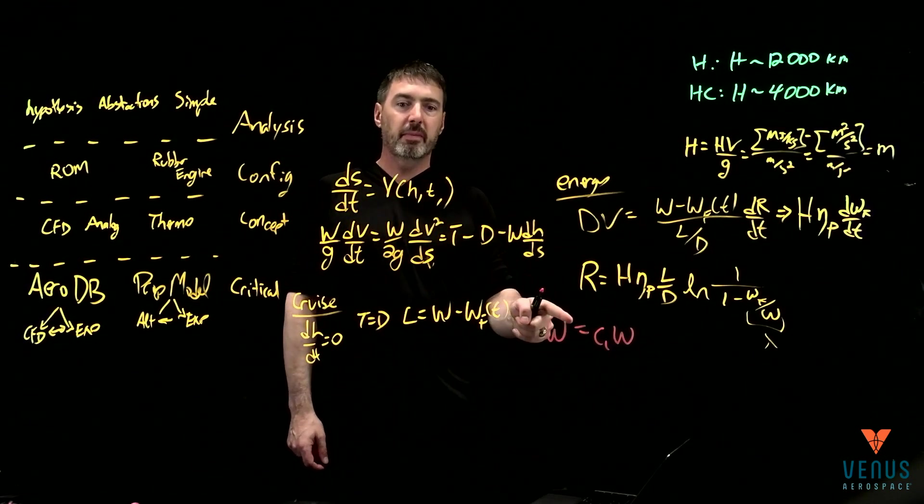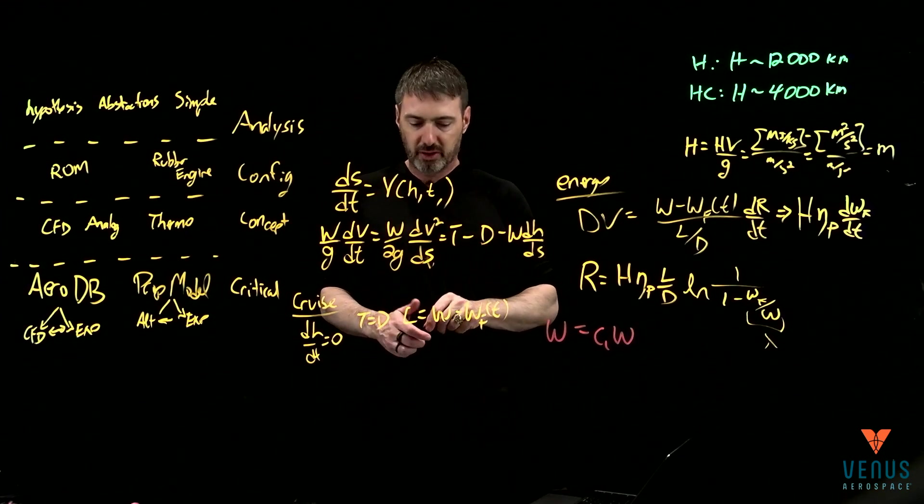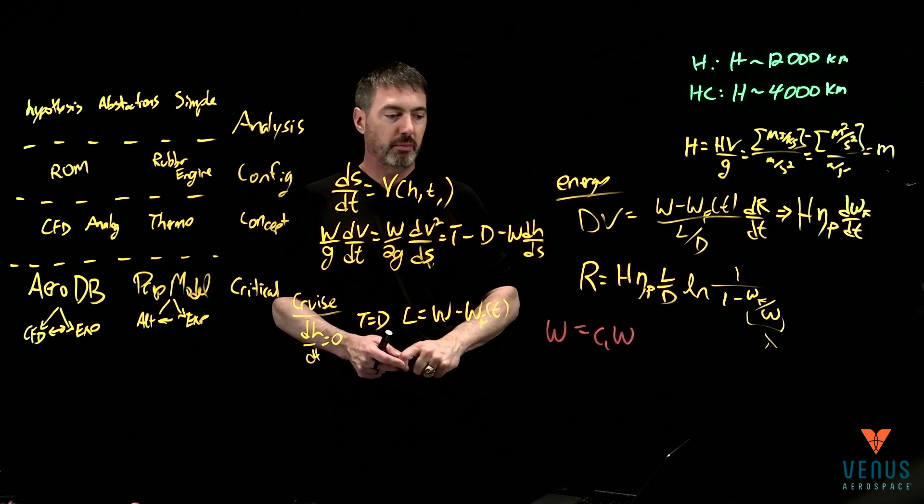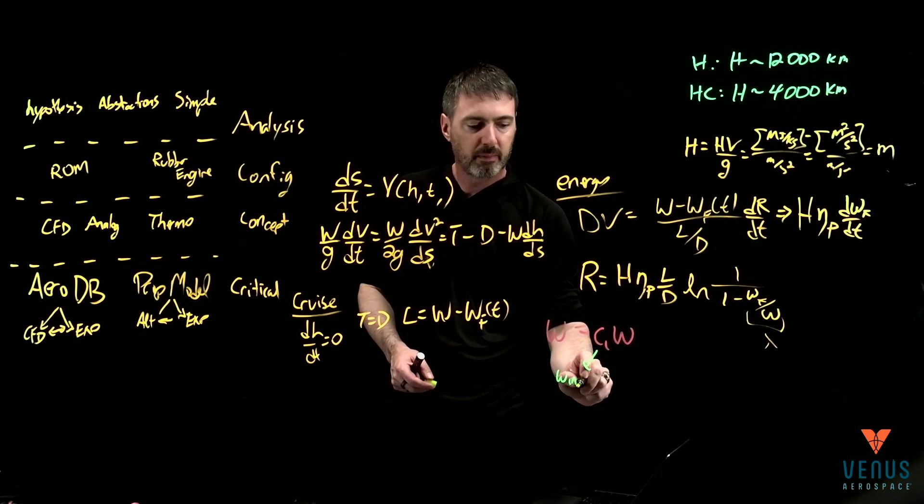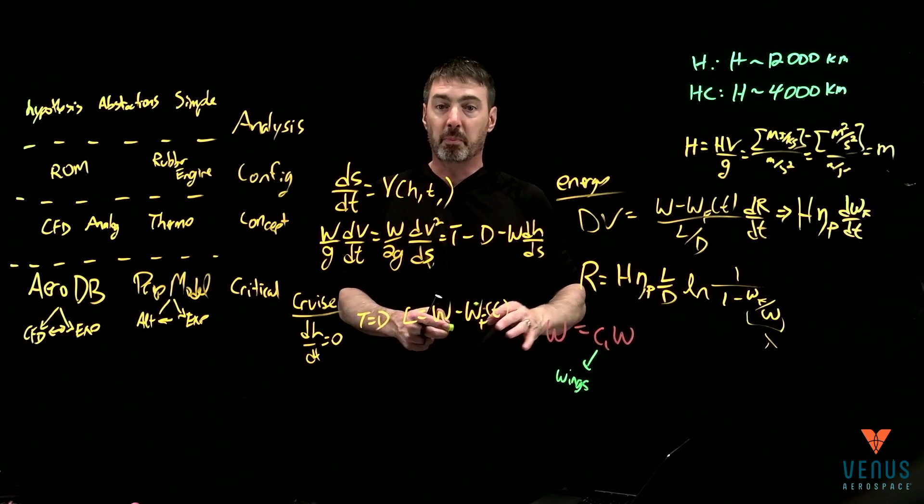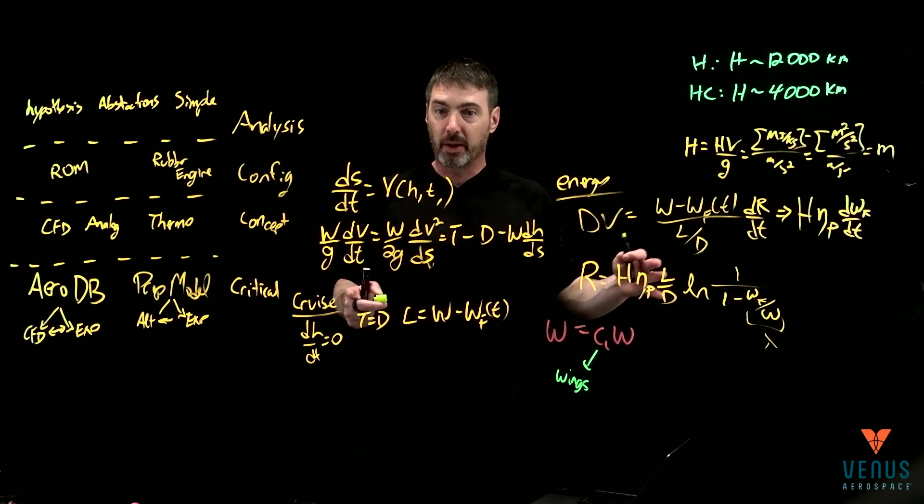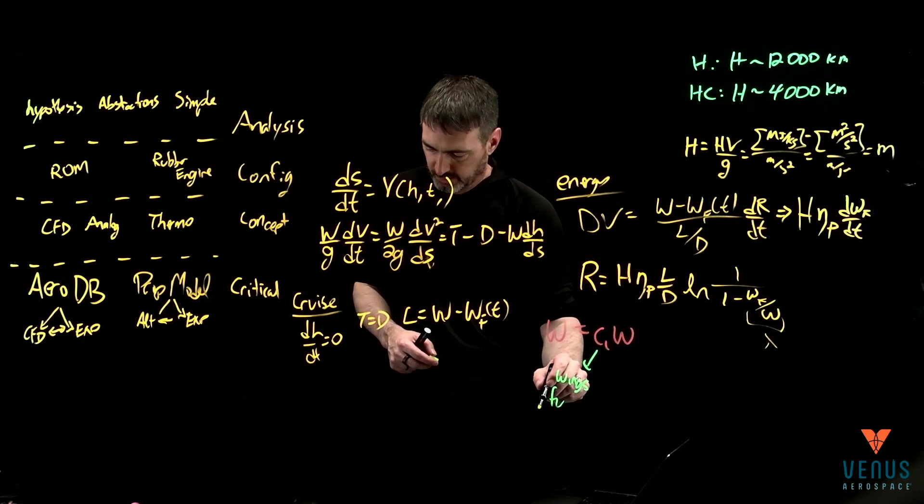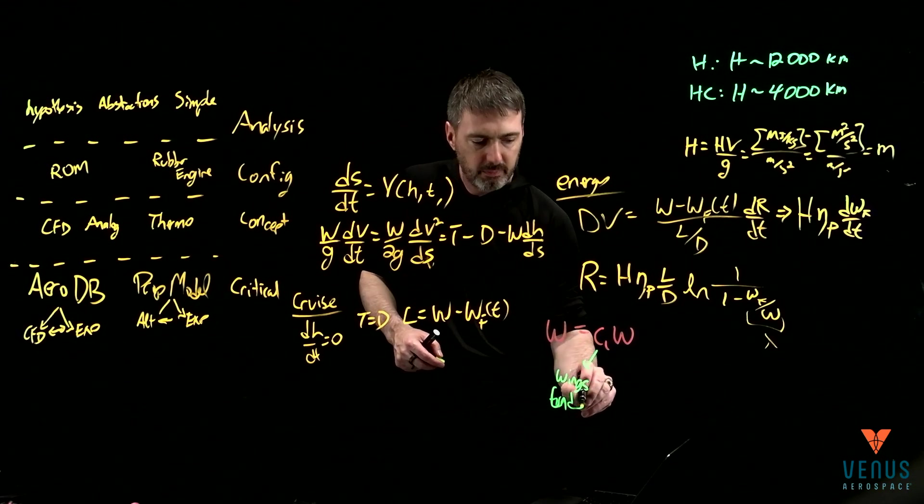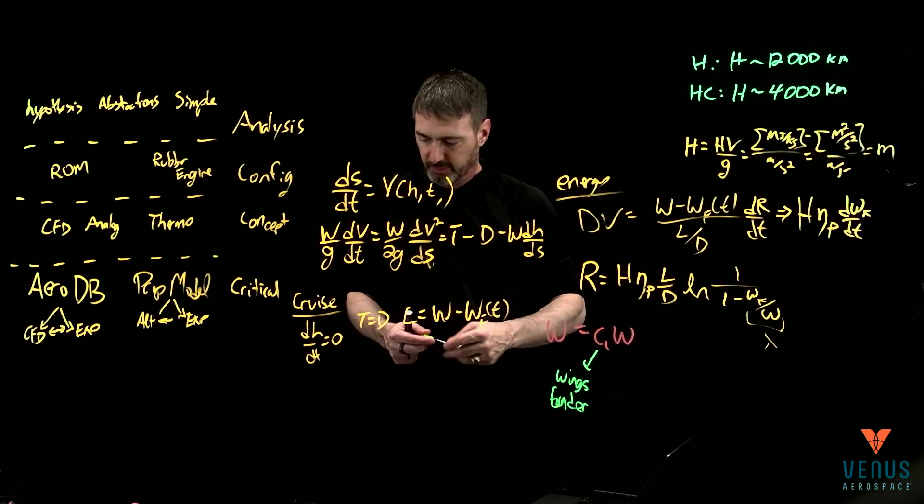Where he then immediately starts saying is, now let's talk about this. Let's talk about this and say the weight of the aircraft. It's going to have a couple different forms. So C1 times weight, it's going to have some function of it. That's a function of the weight of the aircraft itself. So that would be things like wings, fuselage, undercarriage, a few other things.